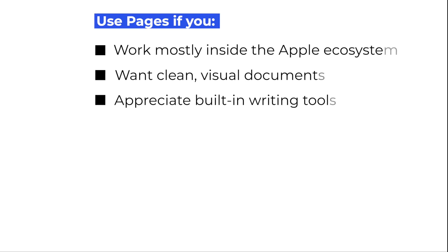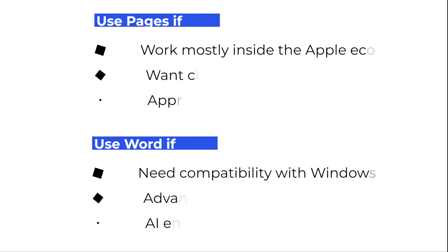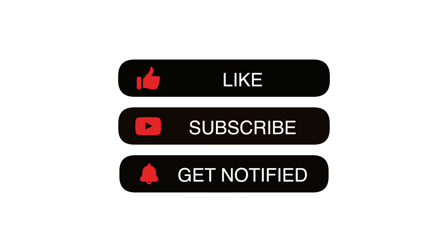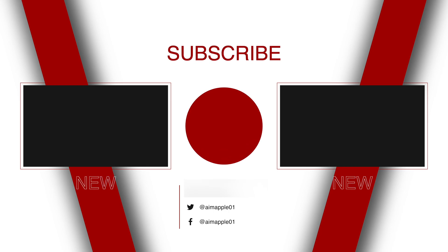Alright, let's wrap this up. Use Pages if you work mainly on Apple devices, want clean visual documents, and love simplicity, speed, and built-in writing tools. Use Word if you collaborate with Windows users, need advanced formatting, plugins, or citations, or you're excited about Microsoft's new AI features. They're both great, just built for different people. Pages feels like a creative studio; Word feels like a professional office. Choose what fits your world best. That's our full comparison, up to date for 2025. If this helped you decide, drop a like, hit subscribe, and tap that little bell so you don't miss my next Mac and iPhone tips. Tell me in the comments — are you Team Word or Team Pages? I'd love to know. See you in the next one!